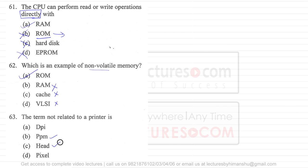PPM is related to a printer. Head is related to a printer. Head means the read-write head that is going to write on the printer. But pixel is not related. Pixel is for images, for screens we use pixels. Pixels we do not use in terms of printers because in printers we use DPI or PPM. So pixel is not a term which is related to printers.